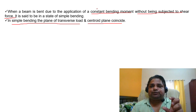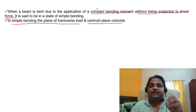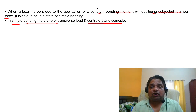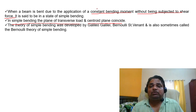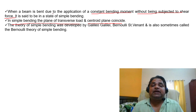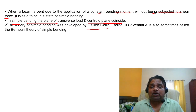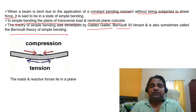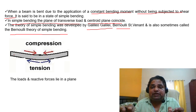To define simple bending: it is the condition where only a constant bending moment is applied due to an external transverse load, but there is no shear stress. The theory of simple bending was developed by Galileo Galilei, and is sometimes called the Bernoulli theory or the Euler–Bernoulli beam bending theory.